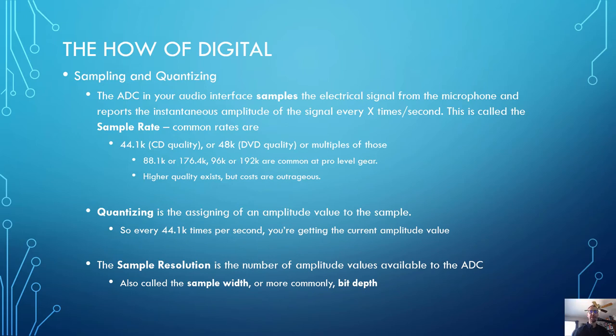Quantizing is the assigning of an amplitude value to the sample. So every 44,100 times per second you're getting the current amplitude value. The quantization is taking that value and snapping it to the nearest possible value that it can reproduce. The sample resolution is the number of amplitude values available to your analog to digital converter — also called the sample width or more commonly bit depth.